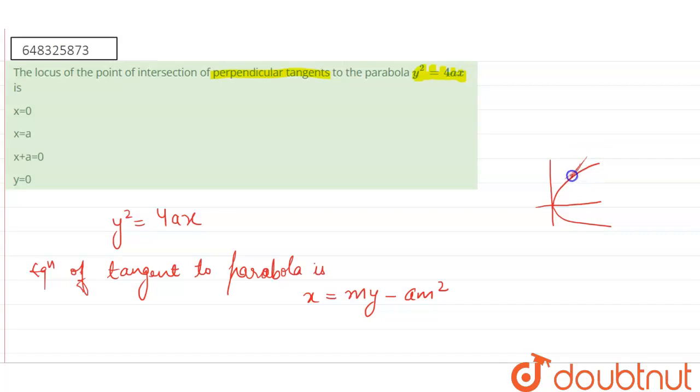Somewhere here like this. The point is if it cut at 90 degree, the tangent is such that it meet at 90 degree, then we have to find the locus of this point.